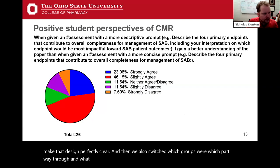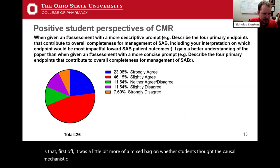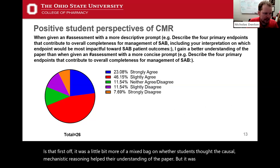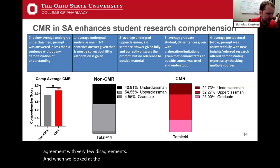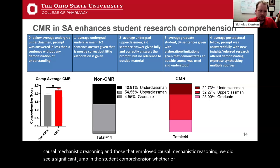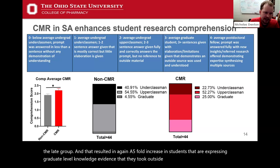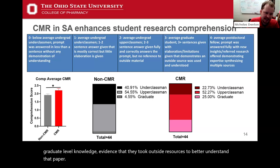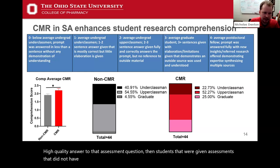What we found is that it was a somewhat mixed bag on whether students thought causal mechanistic reasoning helped their understanding of the paper, but it was still mostly agreement with very few disagreements. When we looked at comprehension between annotations devoid of causal mechanistic reasoning versus those that employed it, we saw a significant jump in student comprehension regardless of whether they were in the early or late group. This resulted in a fivefold increase in students expressing graduate-level knowledge — evidence that they consulted outside resources to better understand the paper and provide a high-quality answer — compared to students who received assessments without the full causal mechanistic reasoning cycle.